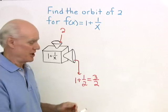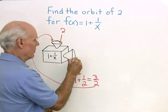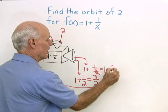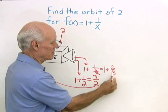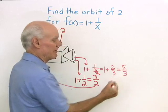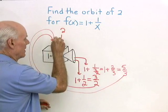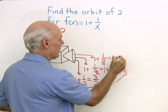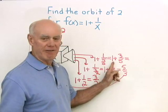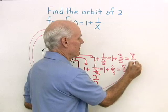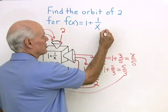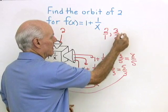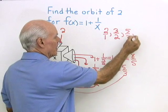That first output of 3 halves becomes the next input. What comes out then is 1 plus 1 over 3 halves, which is 1 plus 2 thirds. And 1 plus 2 thirds is 3 thirds plus 2 thirds, giving 5 thirds. Putting 5 thirds back in gives 1 plus 1 over 5 thirds, which is 1 plus 3 fifths, and 5 fifths plus 3 fifths gives 8 fifths. So far the orbit looks like: 2, then 3 halves, then 5 thirds, then 8 fifths.